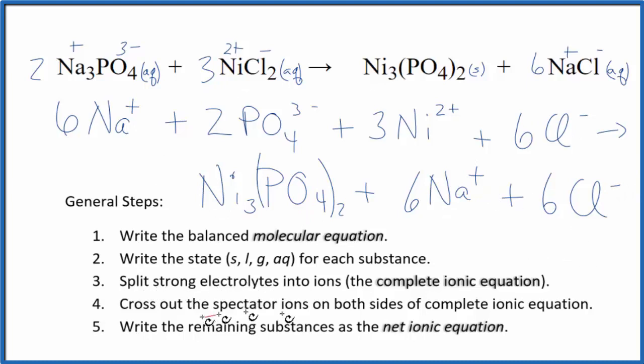Now we can cross out spectator ions. These are ions that appear on both sides of the chemical equation. They haven't changed, so we're not interested in them.